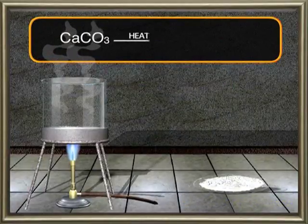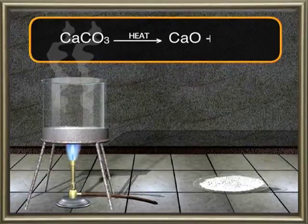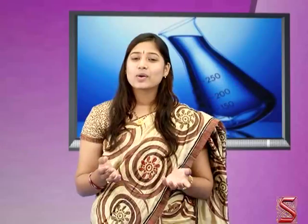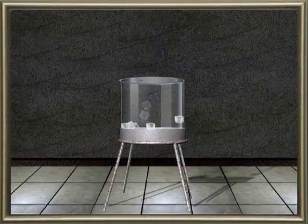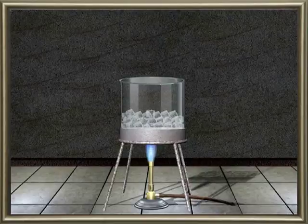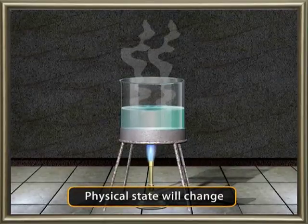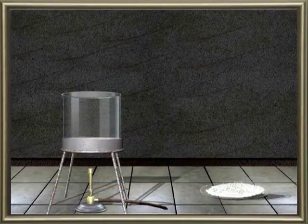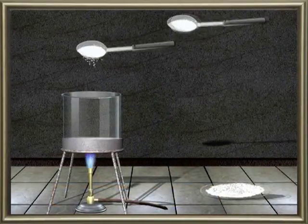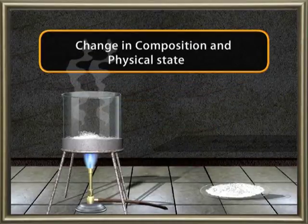The solid residue and carbon dioxide obtained will have less weight than the parent calcium carbonate. CaCO₃ on heating gives rise to CaO plus CO₂. We can understand these facts: when you heat ice, only the physical state will change while the composition remains the same. When you heat calcium carbonate, both the physical state as well as composition will change. So we can conclude that when chemical substances are exposed to heat, their composition may or may not change.